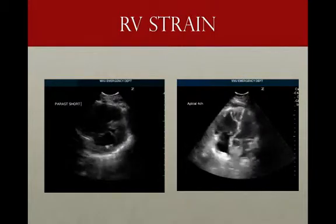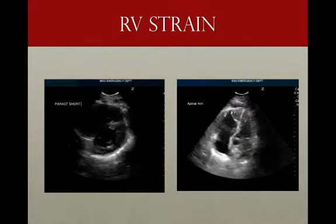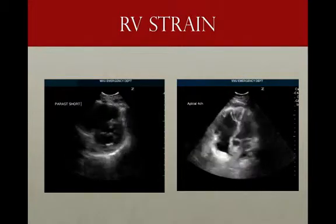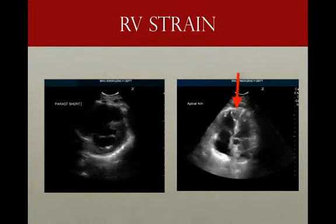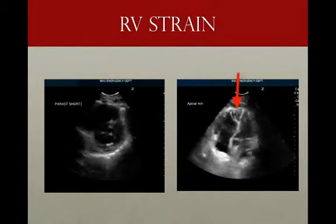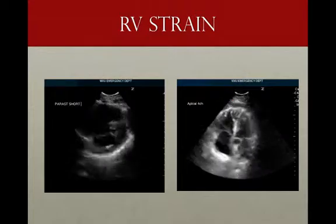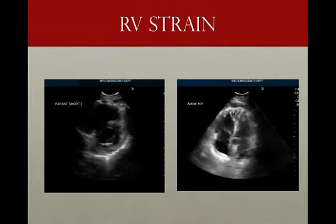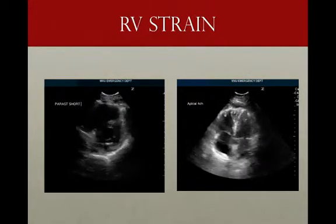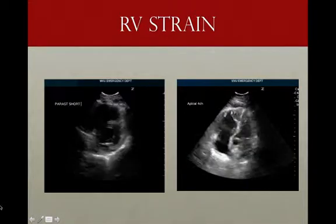We also have McConnell's sign, or the apical wink, which you can see at the apex of the heart — there's a little bowing in at the apex.